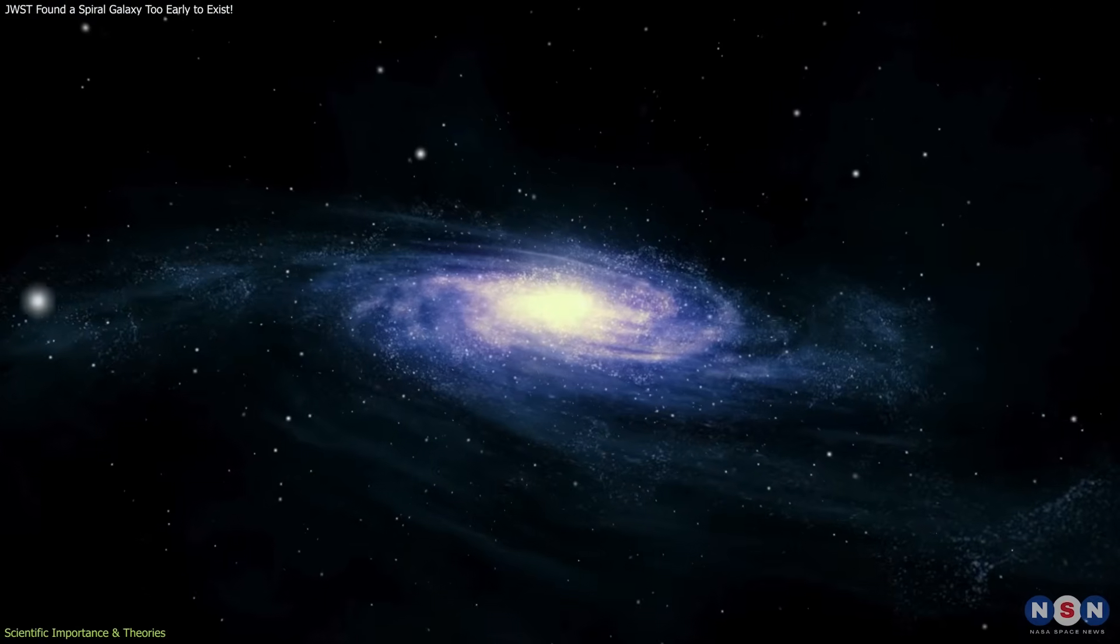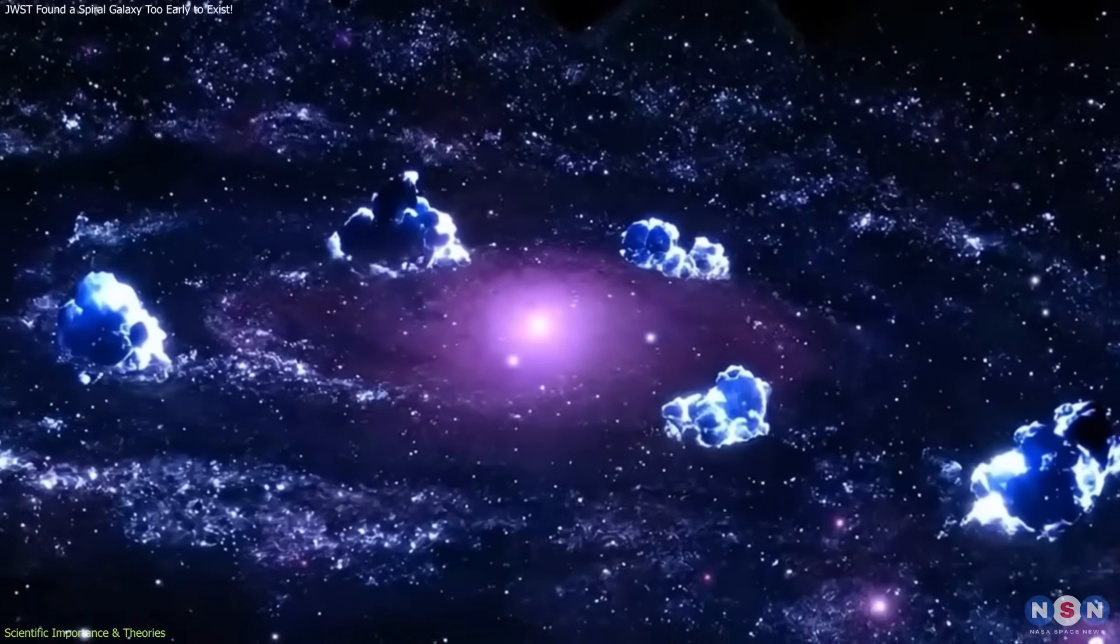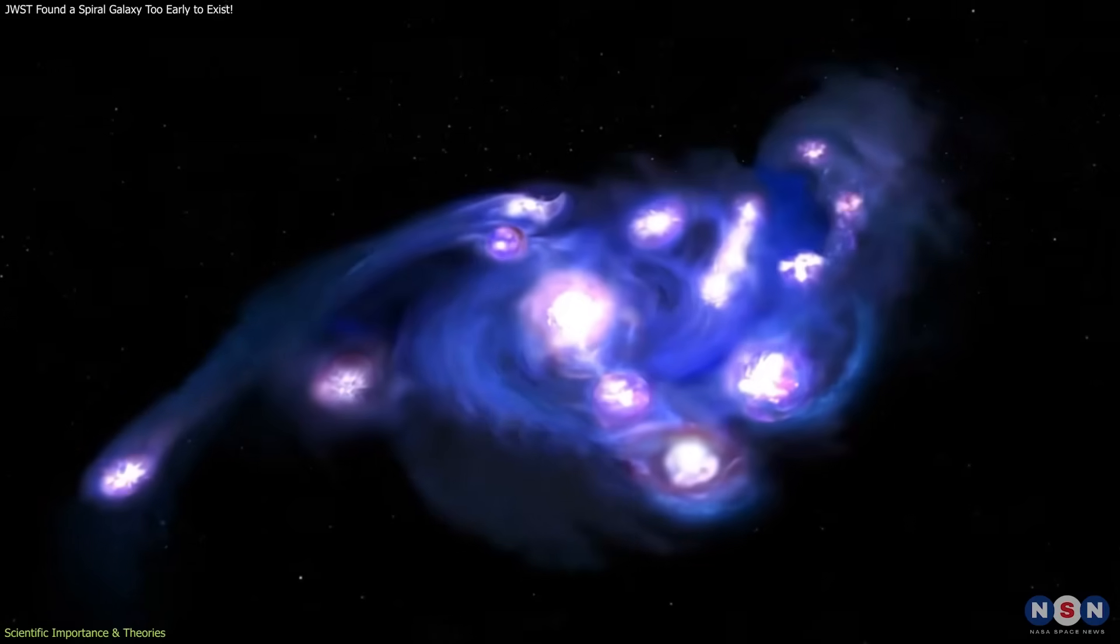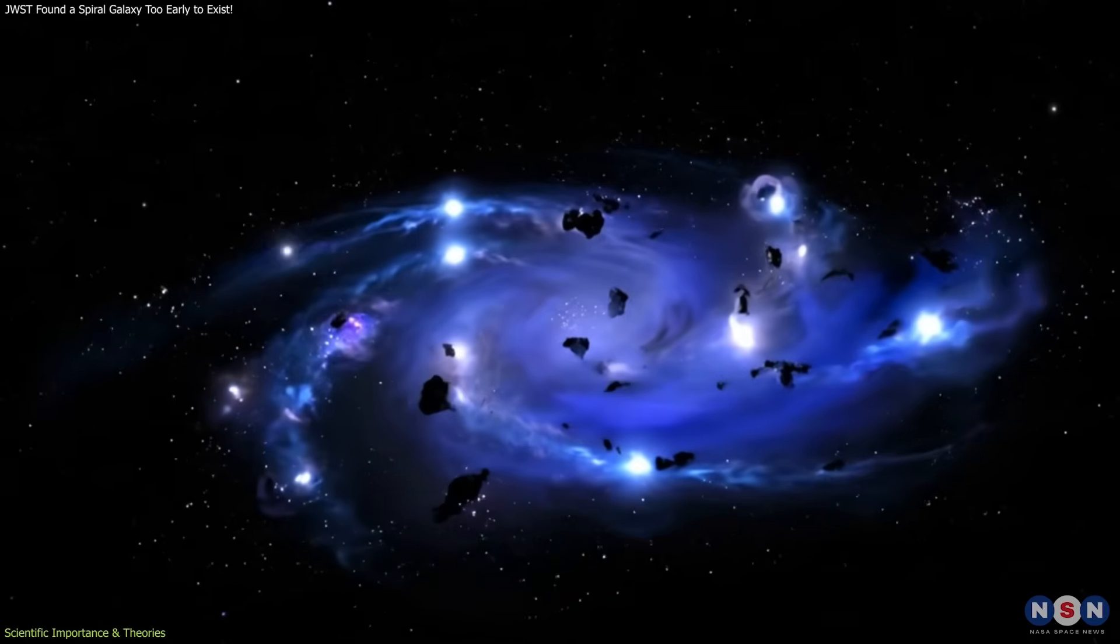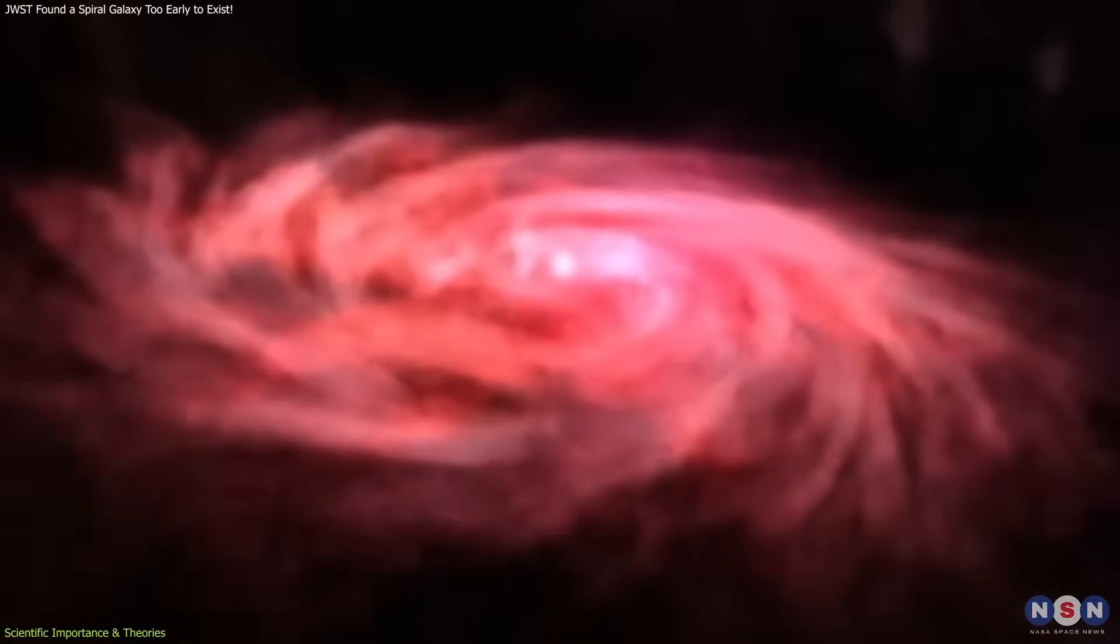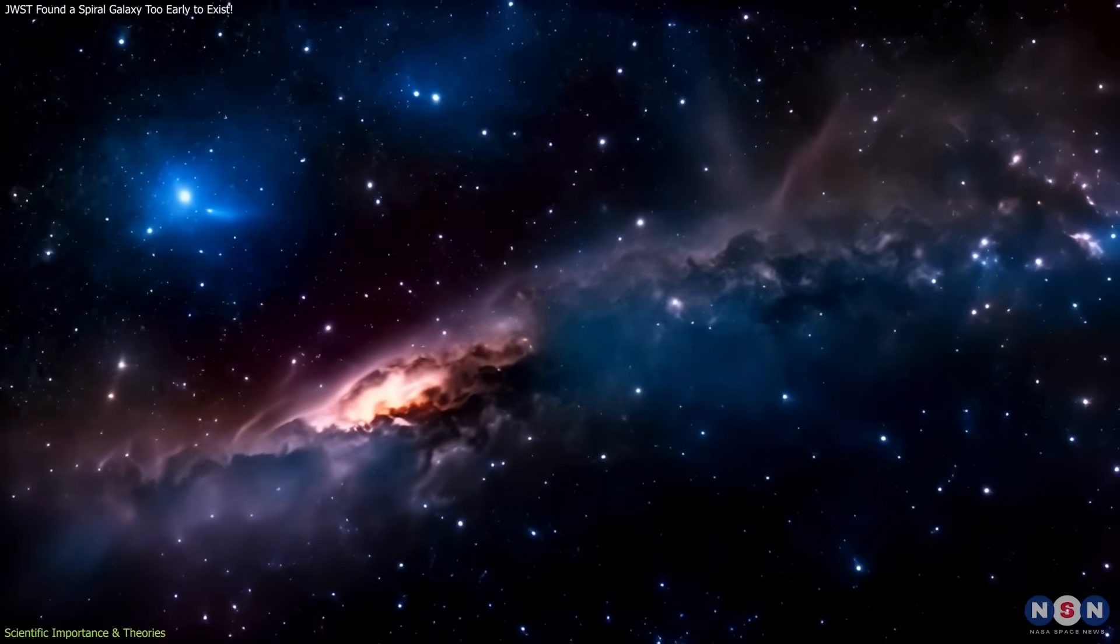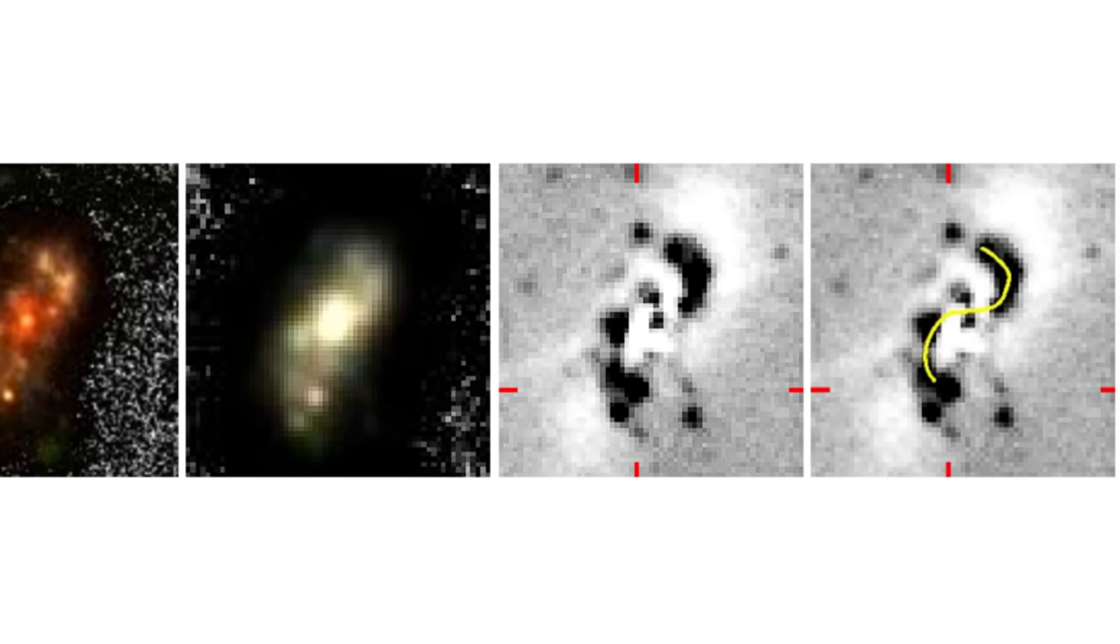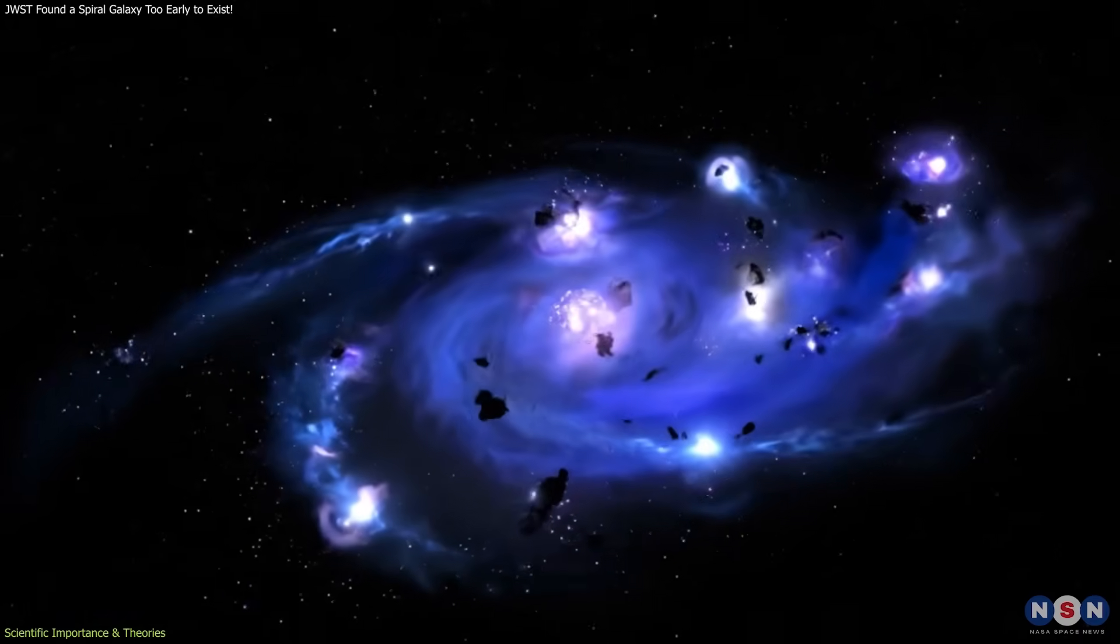The second explanation involves clumpy disk evolution. Early galaxies often formed massive star-forming clumps due to turbulent gas flows. Over time, these clumps can dissolve and redistribute material in ways that seed spiral patterns. This mechanism does not require a fully settled disk at first, but the resulting structure usually becomes clearer only after gradual evolution. For Alec Nanda to display such clean spiral arms so early, this process would have to operate with high efficiency.